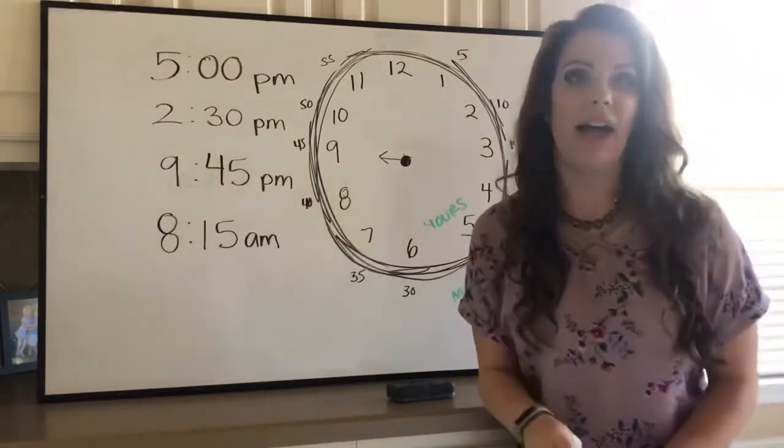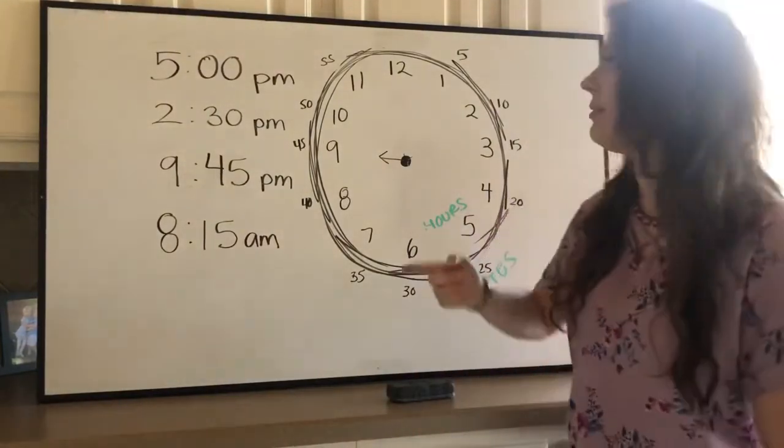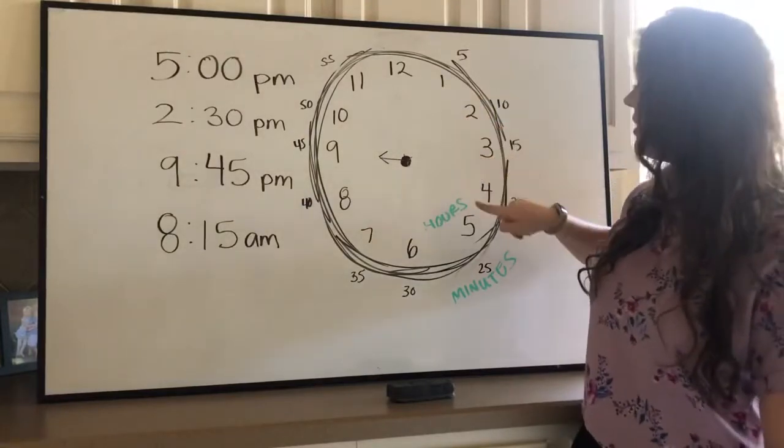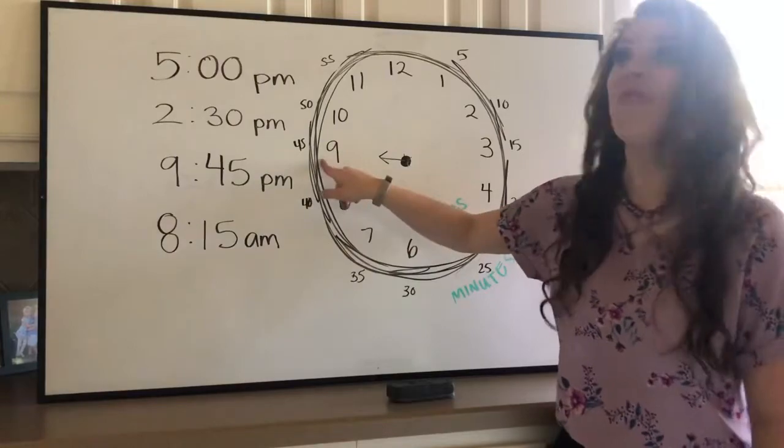Now 45, we haven't done 45 yet. So let's skip count by five. Five, 10, 15, 20, 25, 30, 35, 40, 45.